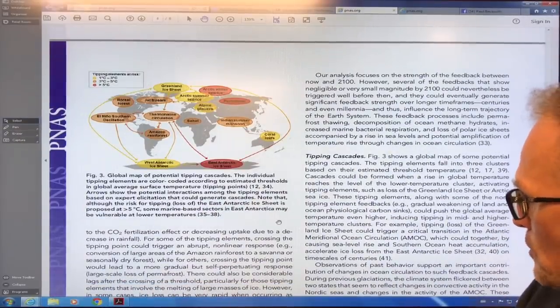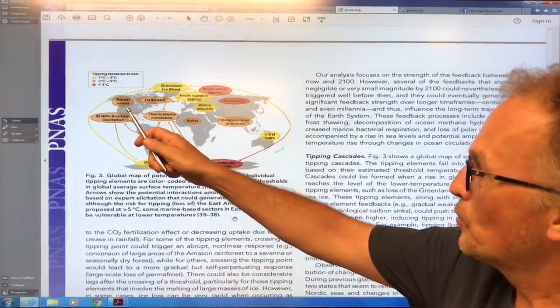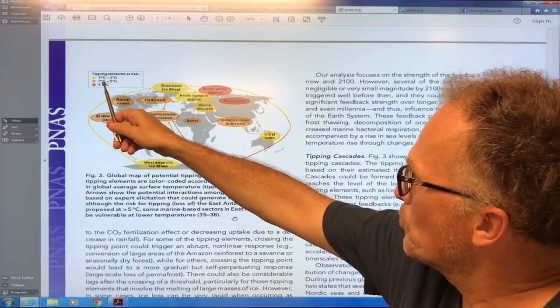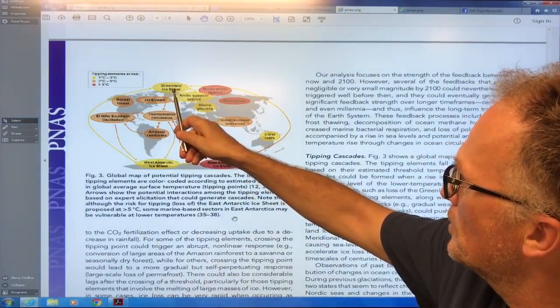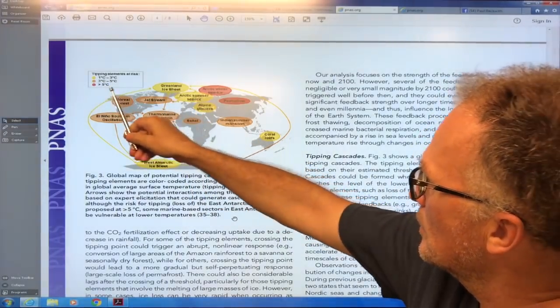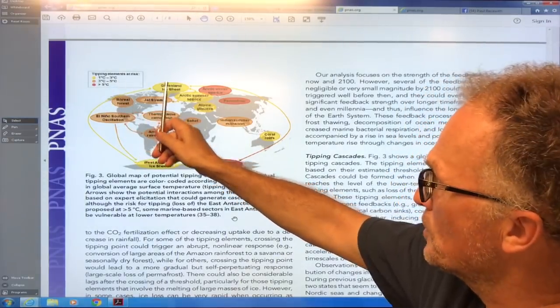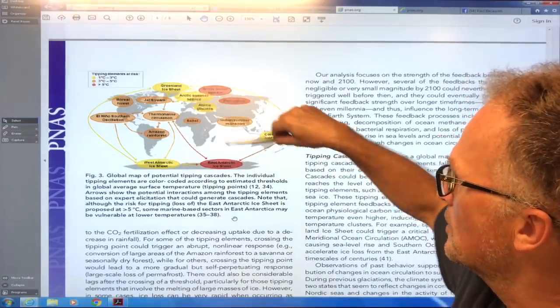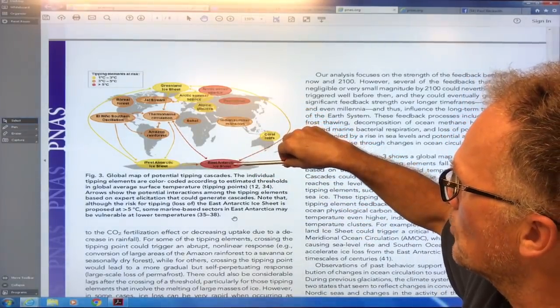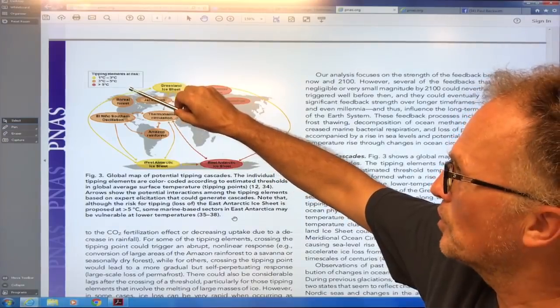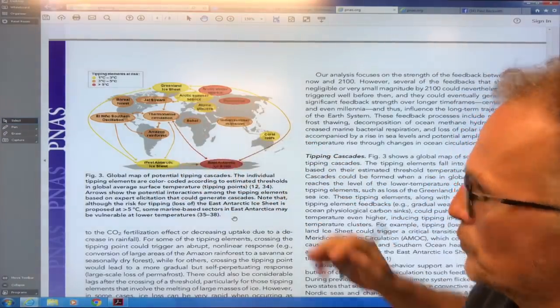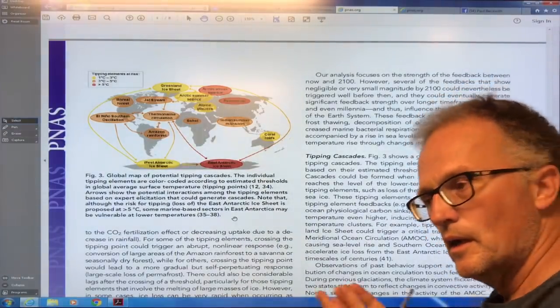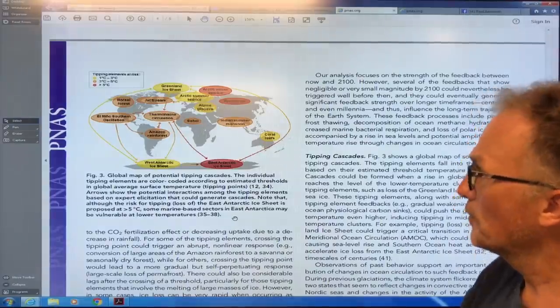And there's all of these different tipping elements. So you hit them at different temperatures and we're already at risk of these yellow ones. And the orange ones are with higher temperature. According to these guys, I have to disagree. A lot of these things are changing already. And the red ones are greater than five degrees Celsius. So they come in at different levels of warming. But then there's cascading effects. You get one thing tipping and then that can lead to another thing tipping and so on down the chain.